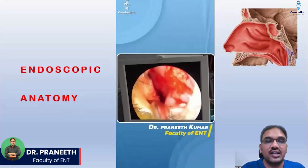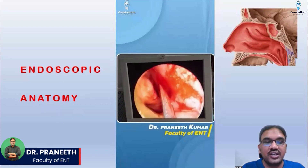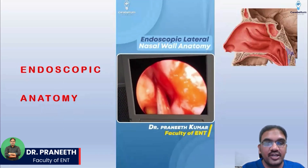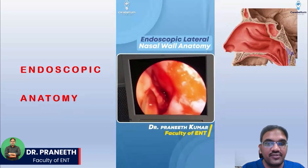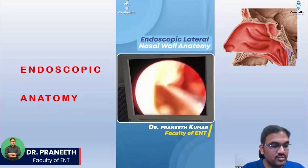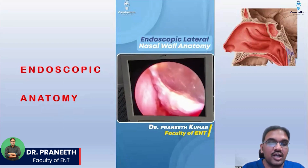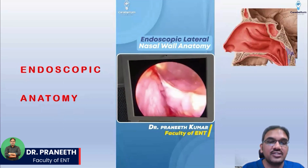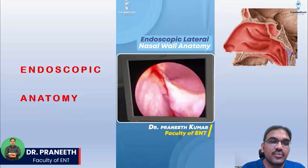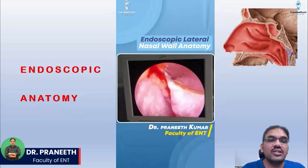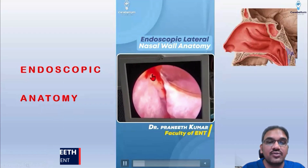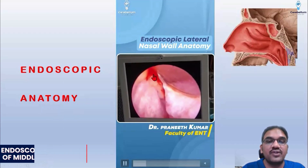As I am entering the nasal cavity, straight below you can see the inferior turbinate. And under it is the inferior meatus, where your nasolacrimal Hasner's valve is present — the teardrop you can see here. So that is your Hasner's valve area.